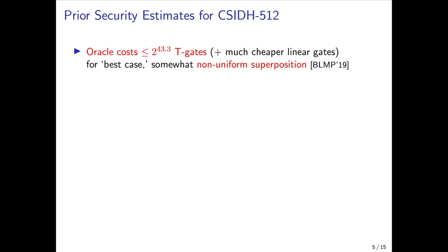Much of this prior work was used to give security estimates for CSIDH and particularly the CSIDH-512 parameterization. With respect to the oracle, Bernstein, Lange, Martindale, and Panny in last year's Eurocrypt showed that the oracle for CSIDH-512 can be implemented in about 2^43 quantum T-gates plus a comparable number of much cheaper linear gates. This is for what they call the best case distribution, which is close to a fairly uniform but not quite uniform superposition over the group. However, work by Beullens, Kleinjung, and Vercauteren shows that there's very good reason to expect a very similar cost of implementing the oracle for a truly uniform superposition.